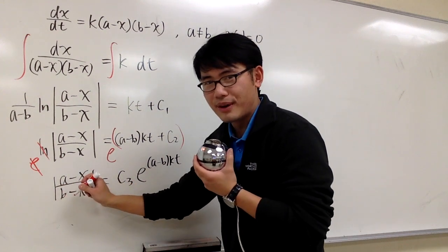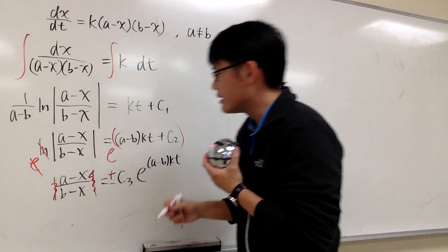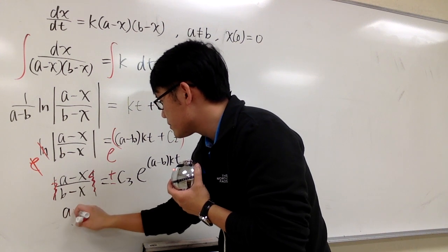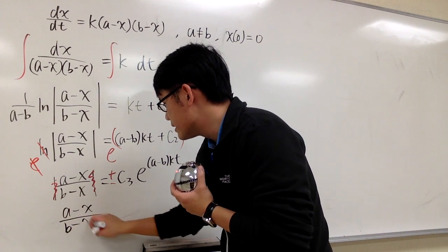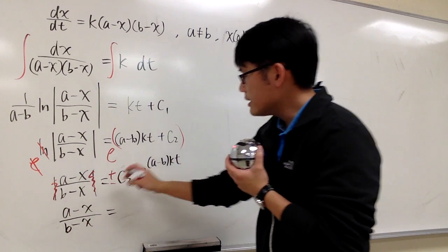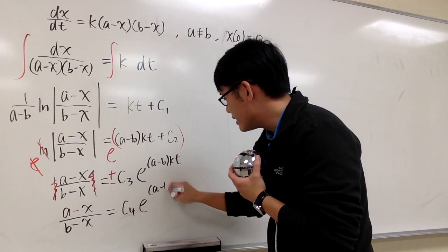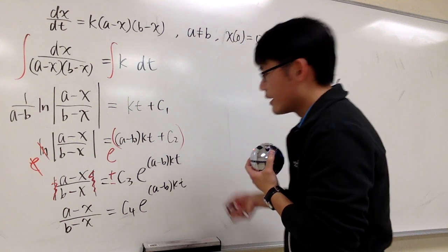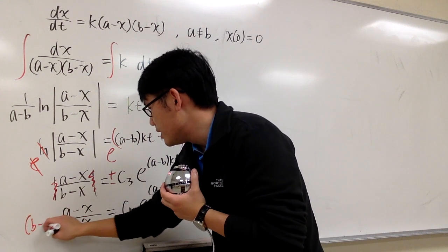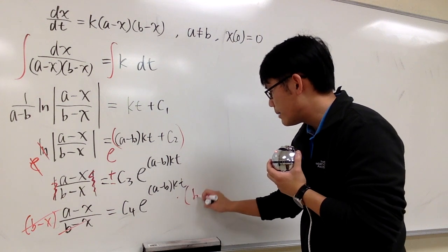Now we have to get rid of the absolute value. To do that, we remove the absolute value bars and put a plus-minus on the right-hand side. So (a minus x) over (b minus x) equals plus-minus c3, which we call c4, times e to the (a minus b)kt. To get x by itself, we multiply both sides by (b minus x) so they cancel on the left-hand side.